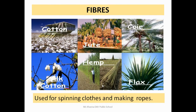Fibers are also obtained from plants — like cotton fiber, silk cotton, jute fiber, hemp fiber, coir fiber, and flax fiber. They are all used for spinning clothes or making ropes.